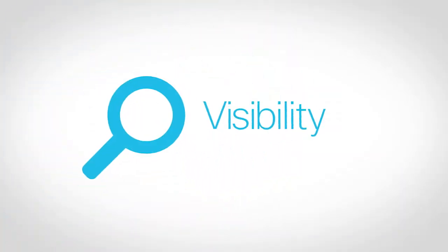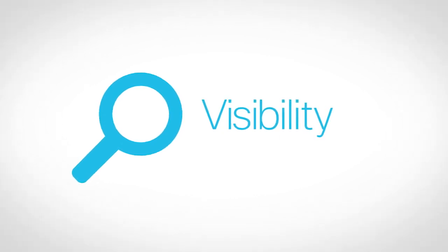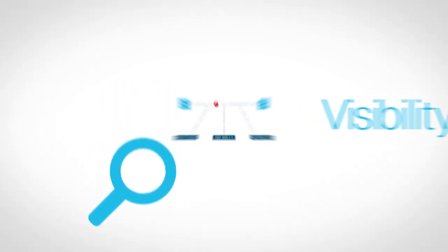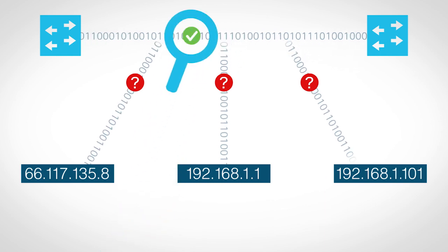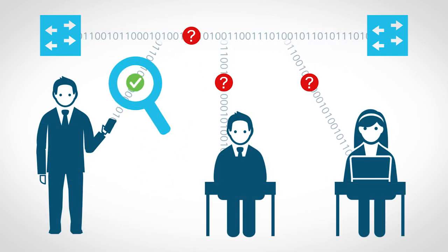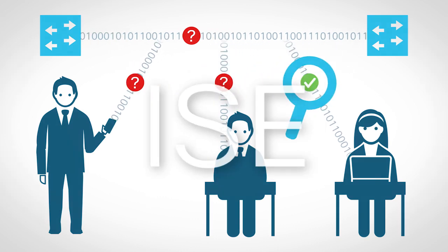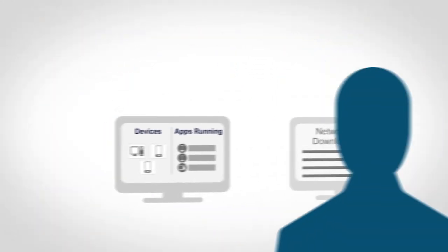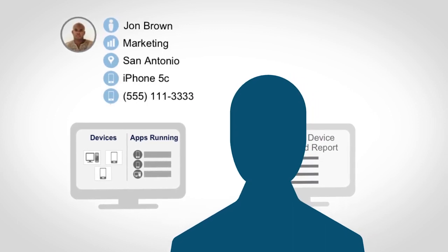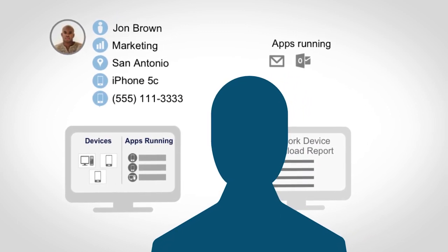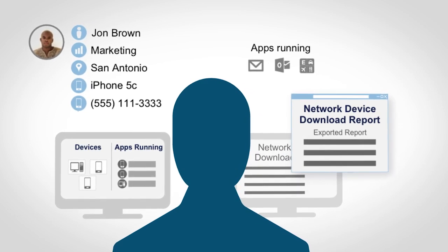In this launch, we're taking visibility to a new level as it's really become the new perimeter. Visibility doesn't just mean seeing the data moving around the network — it's also seeing what's on the network, what's creating all that traffic. This is where ISE shines, and in 2.2, the admin gets additional user and endpoint context from guest users in the network down to the endpoint application details.